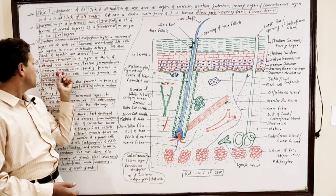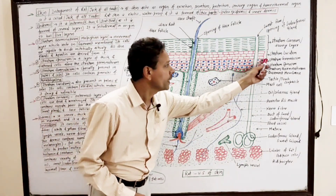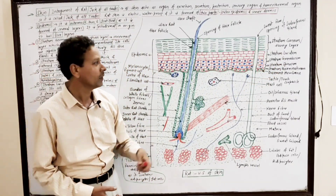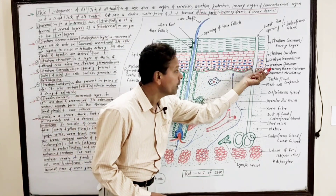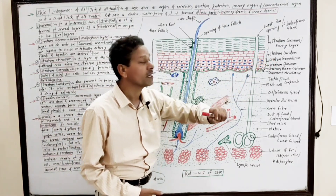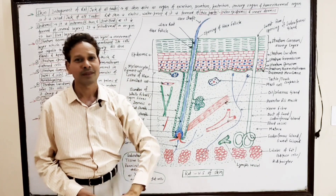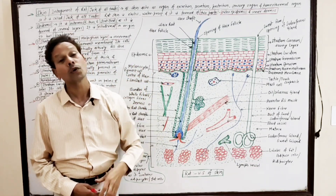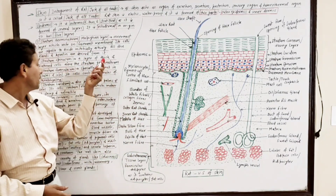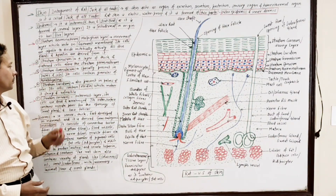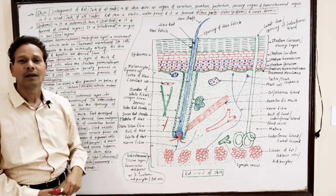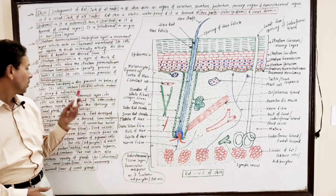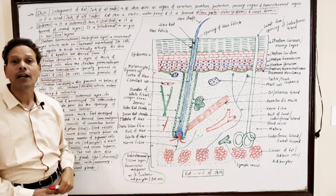Just above the stratum spinosum is the stratum granulosum. It is a characteristic feature of palms and soles. The cells of stratum granulosum contain special granules of keratohyaline.